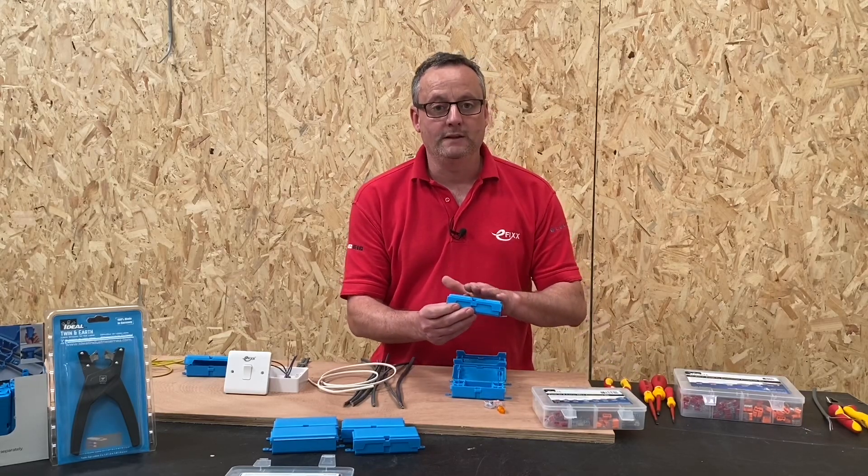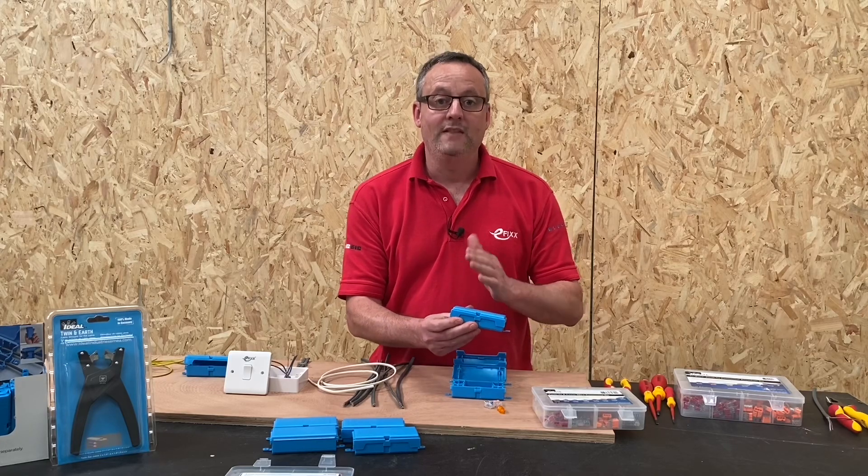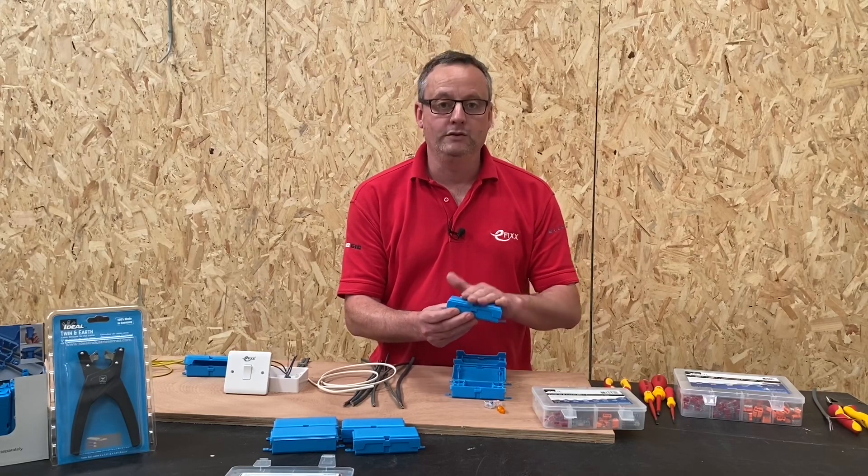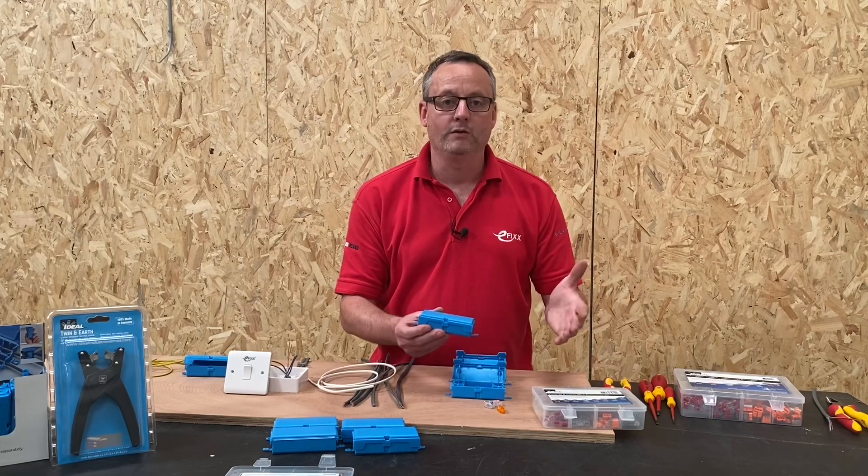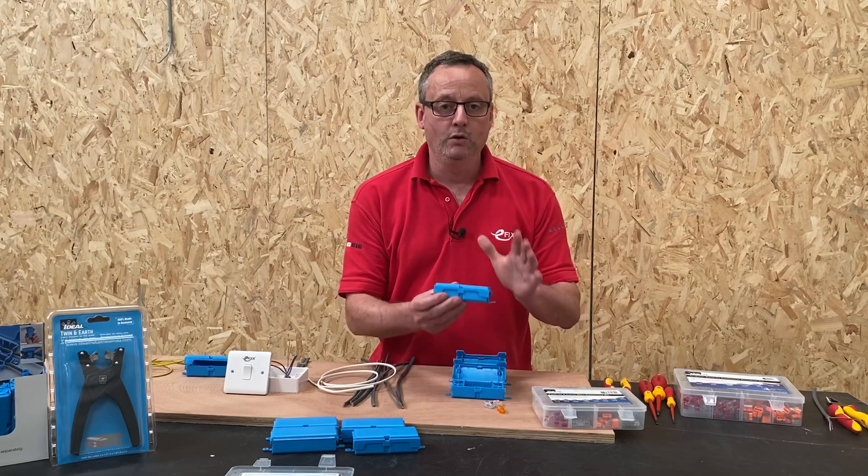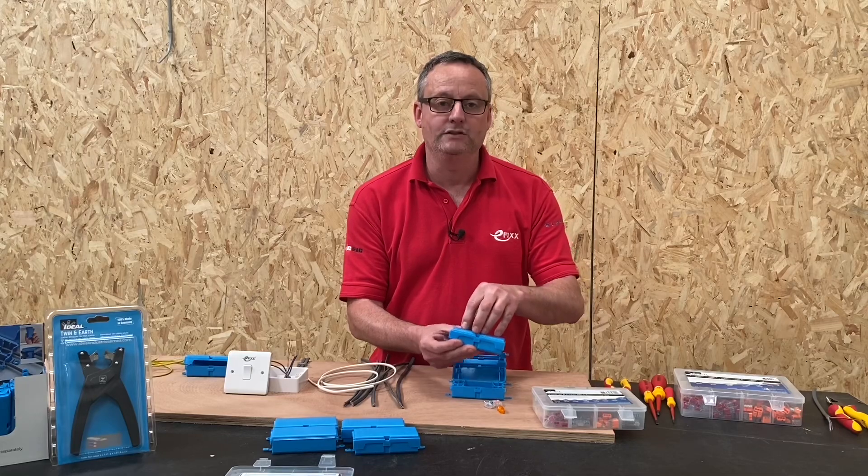However, as soon as we insert them into this lighting joint box, they become rated only at 16 amps. So we couldn't use this box, for instance, to extend a ring final circuit or a cooker circuit. We'll look next at how we're going to make some of the connections within this box.